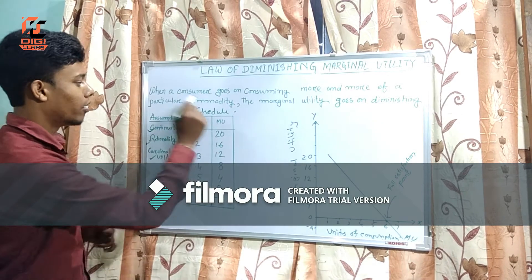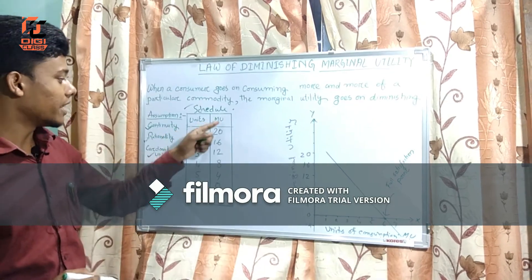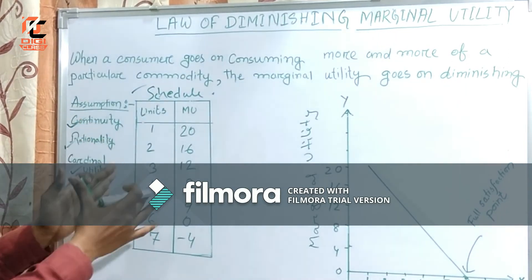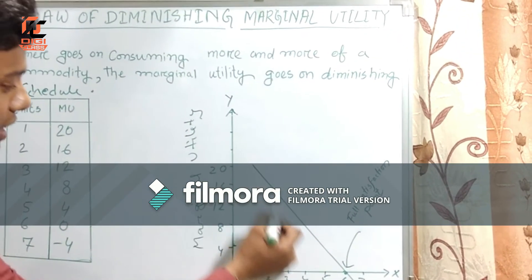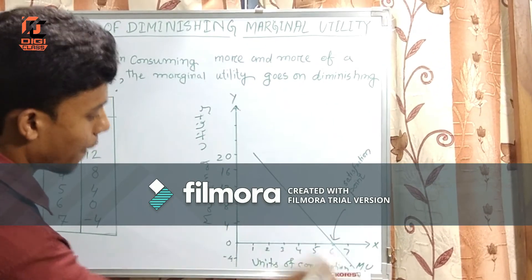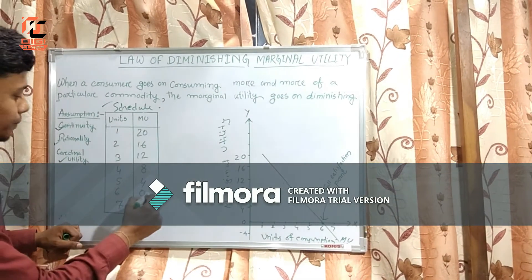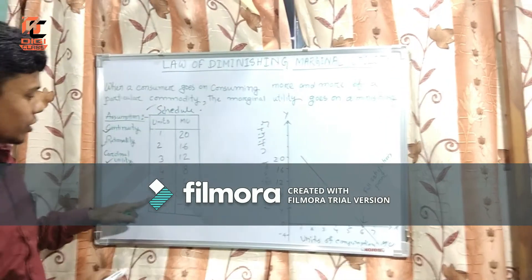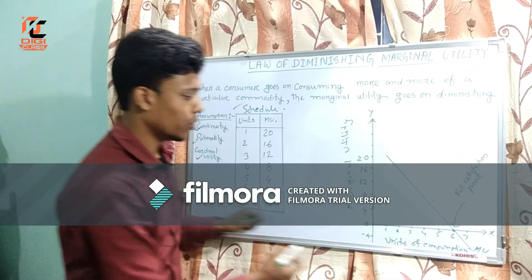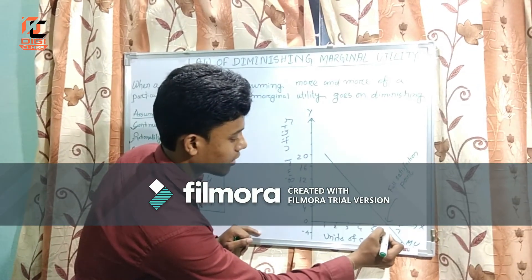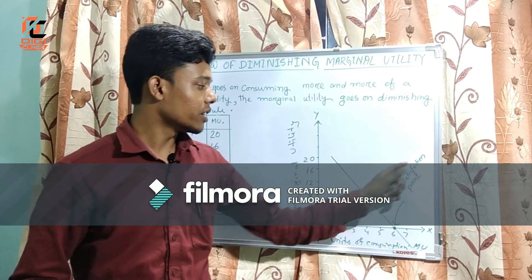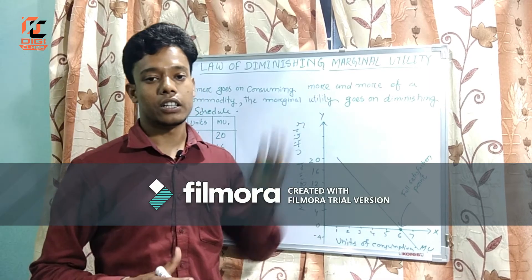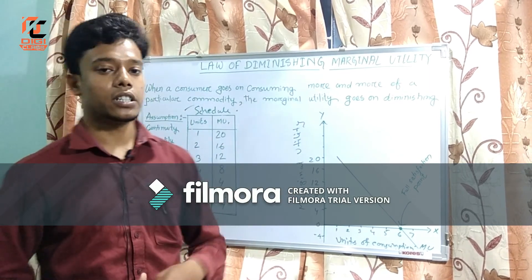Here is the table showing units of consumption and marginal utility. From the diagram we can see that marginal utility is diminishing. At the sixth unit of consumption marginal utility becomes zero, and here the consumer gets maximum — that is, full — satisfaction. Hopefully you now understand the concept of marginal utility and the Law of Diminishing Marginal Utility.